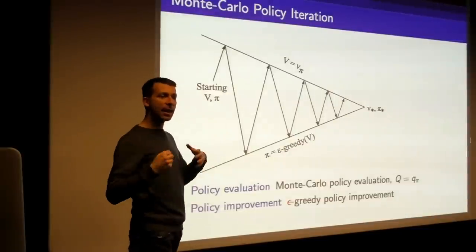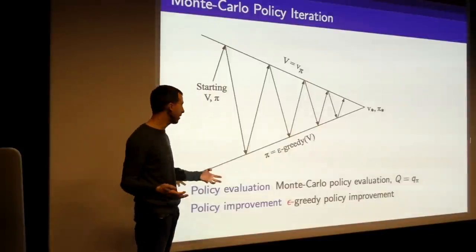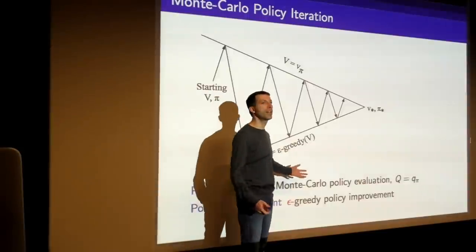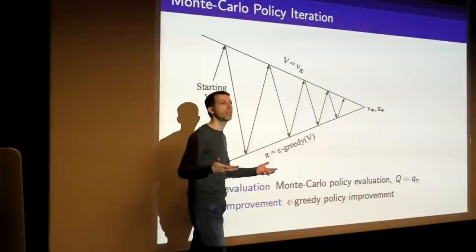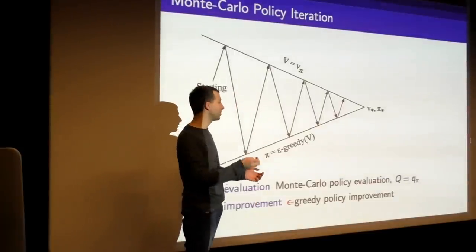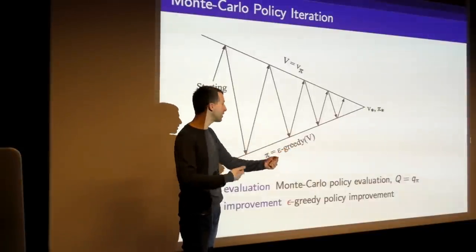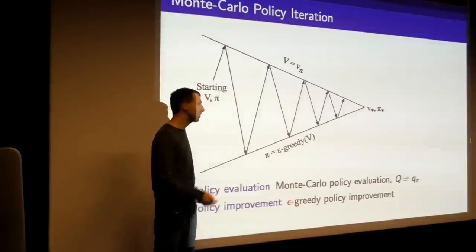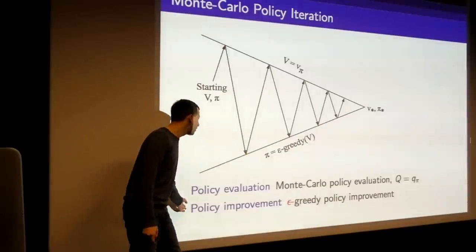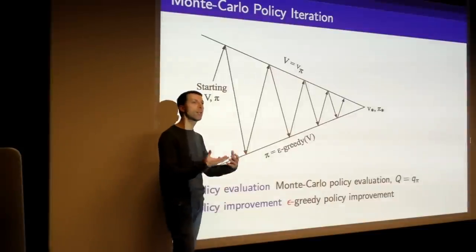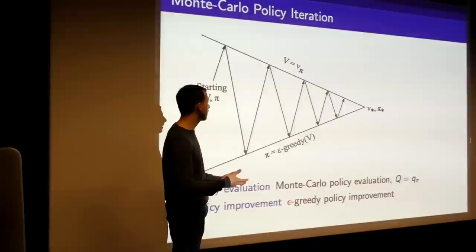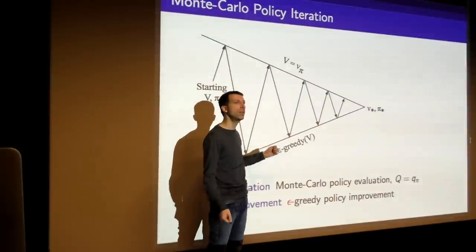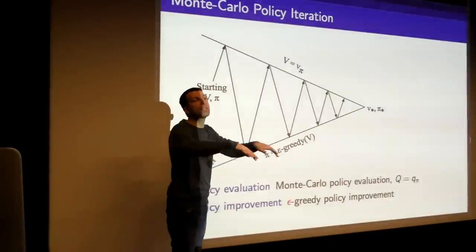Now let's plug that in. We've got two ideas — the generalized policy iteration framework with both steps changed. For policy evaluation, we're plugging in Monte Carlo using Q (action values): run episodes using the current policy, estimate the value of all state-action pairs from the mean return we've seen. For policy improvement, we use epsilon-greedy policy improvement — a softening of the greedy idea. Every time we go down in the diagram, we don't get a completely greedy policy; there's a little exploration. The policy is always stochastic, ensuring that at some rate we explore everything in the environment.